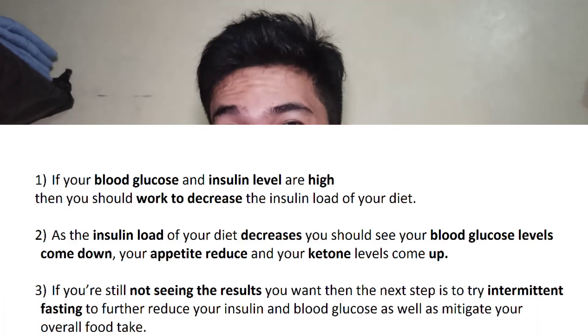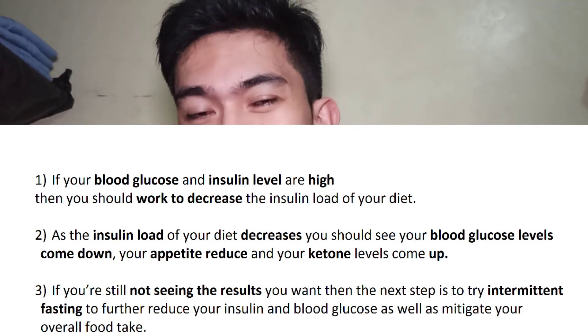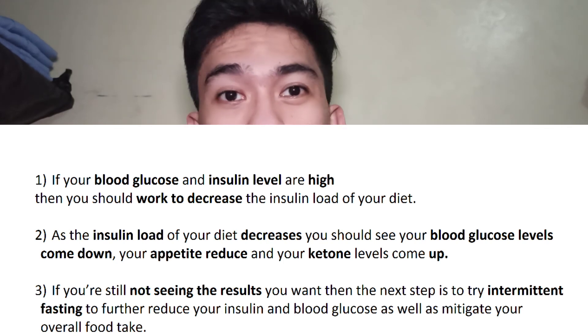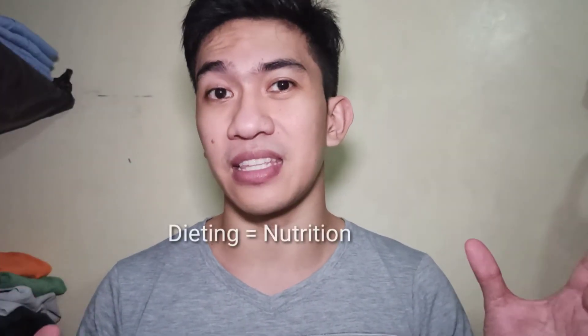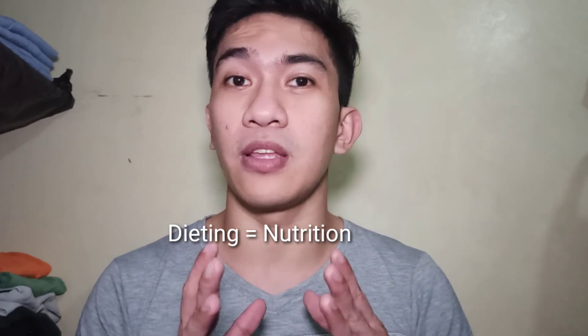Number three: if you are still not seeing the results you want — whether weight loss or otherwise — the next step is to try intermittent fasting to further reduce insulin and blood glucose, and to mitigate your overall food intake. Number four: as your blood glucose starts to normalize, focus on more nutrient-dense foods with lower energy density to support your weight loss goals. As I always say, when you're dieting, you should have nutrition with it — dieting and nutrition are one. A dirty diet can only put your body at risk.